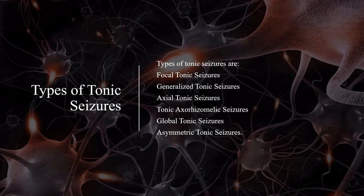Types of tonic seizures are focal tonic seizures, generalized tonic seizures, axial tonic seizures, tonic axiomelic seizures, global tonic seizures, and asymmetric tonic seizures.